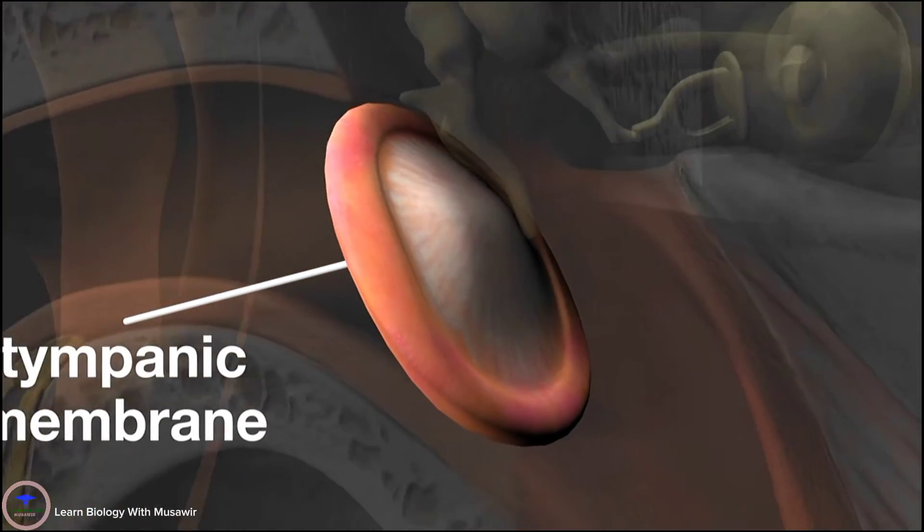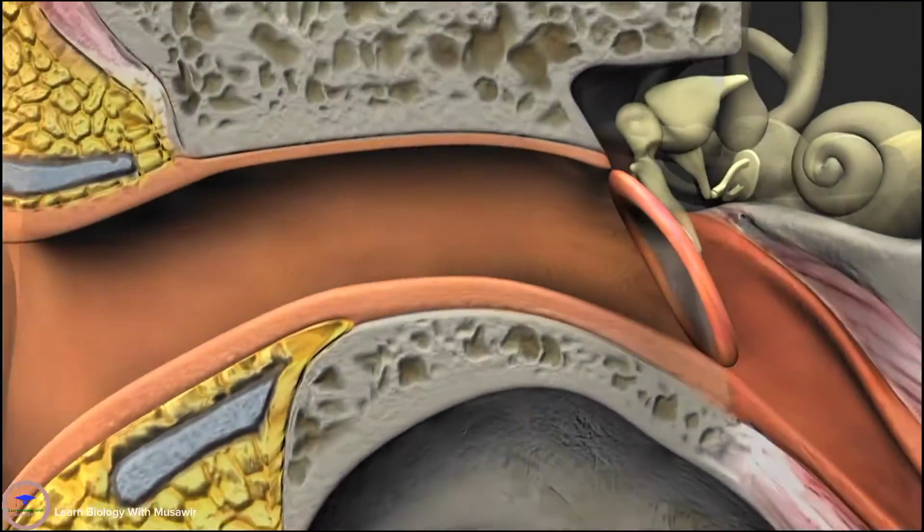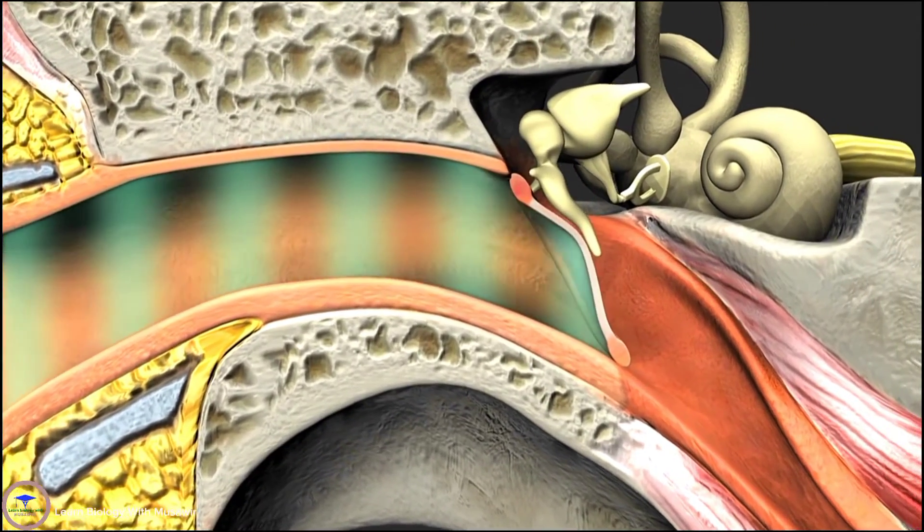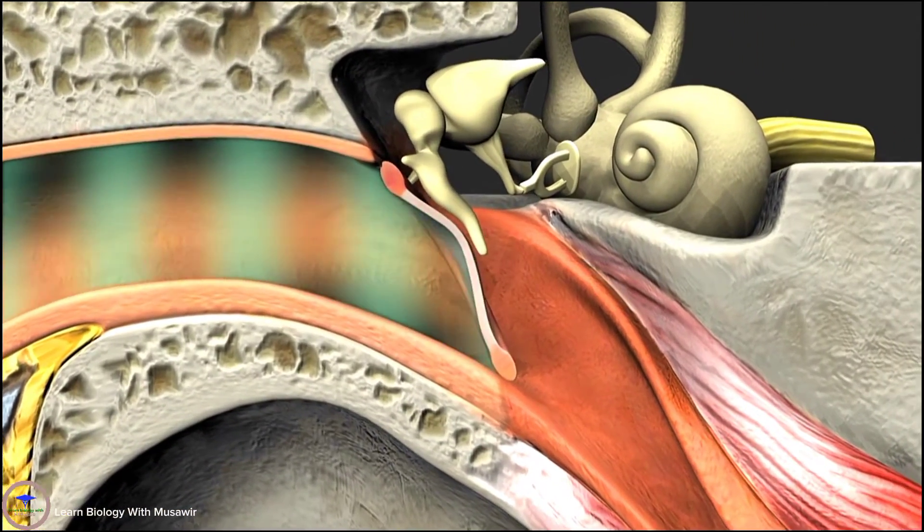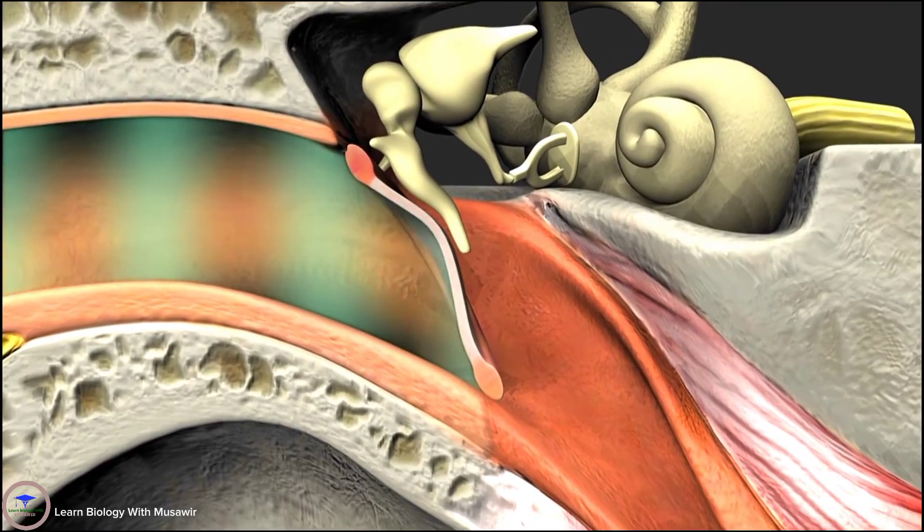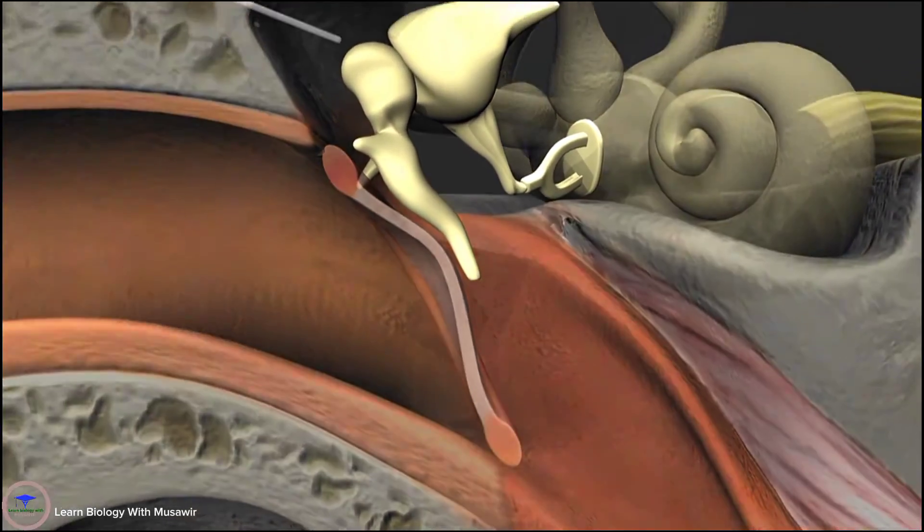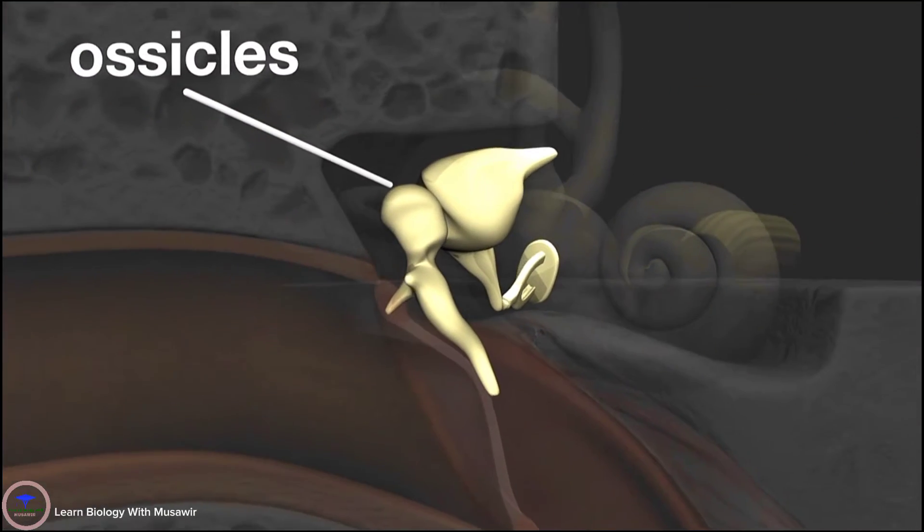Sound waves enter the ear canal and strike the tympanic membrane, setting it in motion. The louder the sound, the more the membrane moves. The middle ear also contains three small bones known as the ossicles.